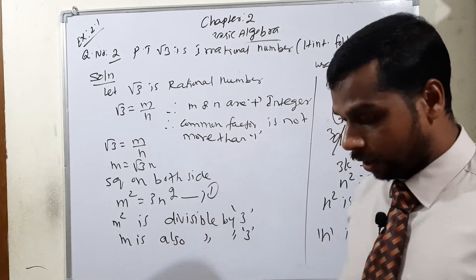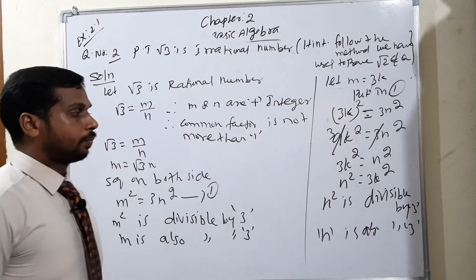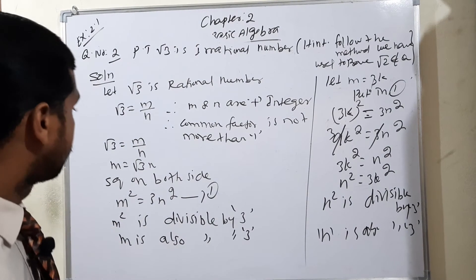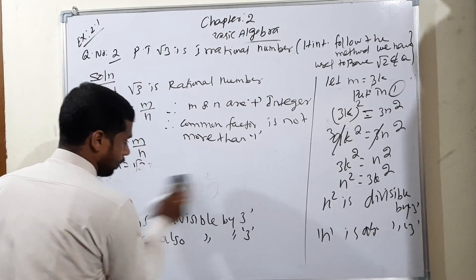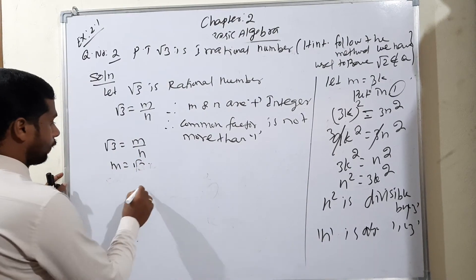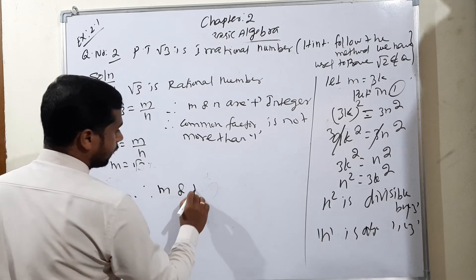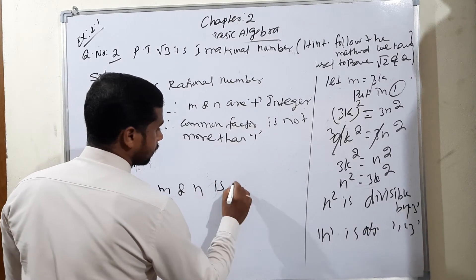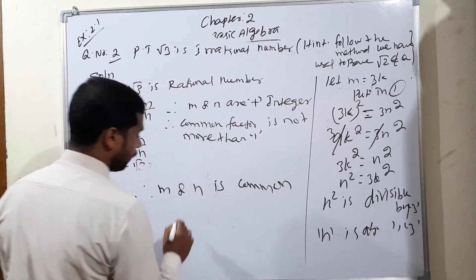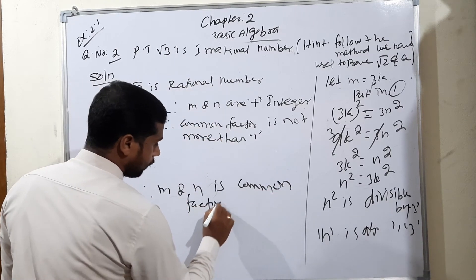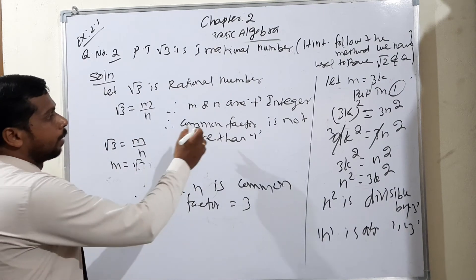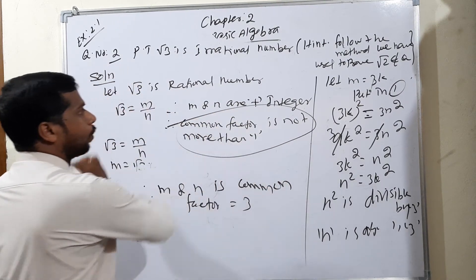From the two conditions, both m and n are divisible by 3. Therefore, m and n have a common factor of 3. But this contradicts our assumption that their common factor is not more than 1.